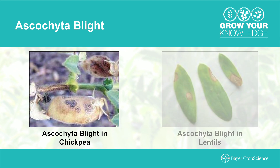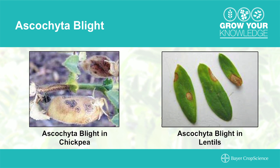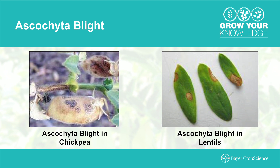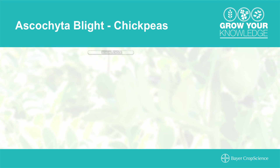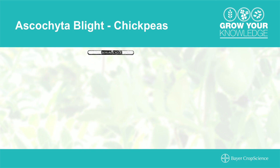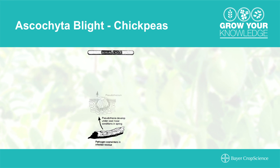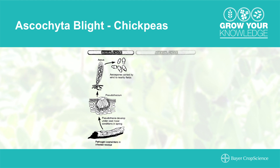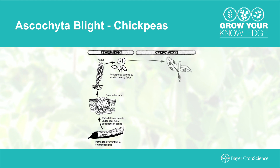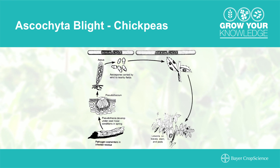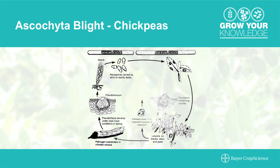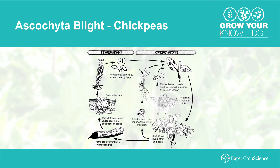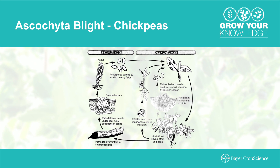Ascochyta blight is one of the most dangerous diseases in chickpeas and lentils. It overwinters on crop residue and seed and is characterized by spotted shriveled seed and discoloration of both leaves and stems. Ascochyta blight will infect chickpeas in two different fashions: first through the sexual cycle, which arises from crop residue — infected crop residue will release spores which land on the crop and cause infection. The second wave is through the asexual cycle, which starts with infected seed. Infected seed will pass the pathogen onto a seedling and then transfer from the seedling stage to the adult stage of the chickpea.